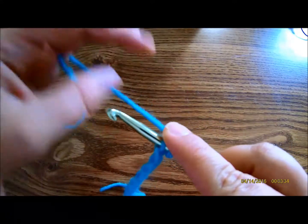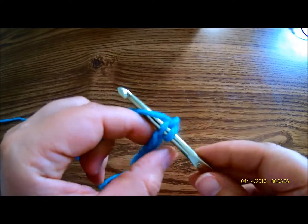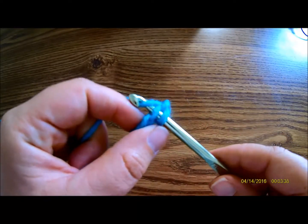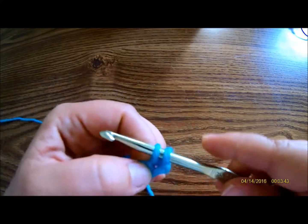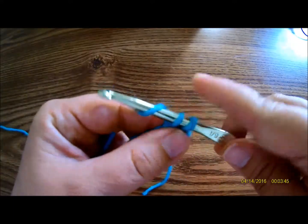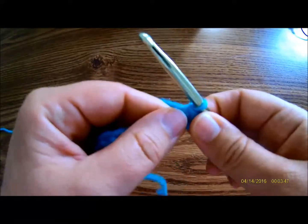If you need to use a double or a triple, this is how you do it, but this is just going to be a single crochet. So yarn over, pull up a loop, yarn over, and pull through two loops, and then you have successfully turned.